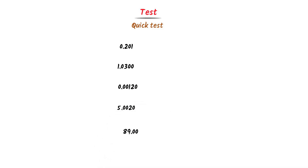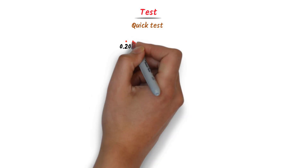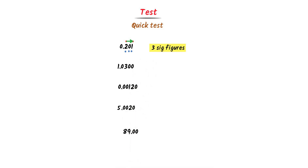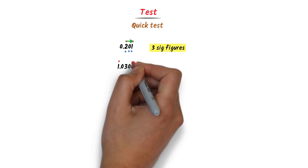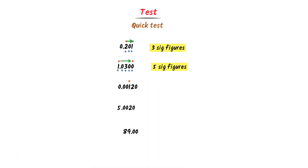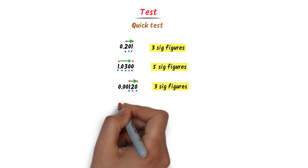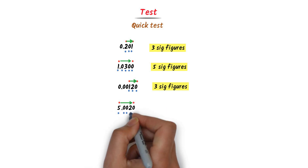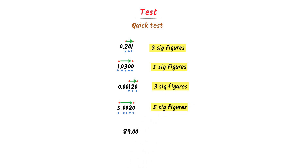Now I will take a quick test. Let's consider these decimal numbers. Pause the video and find significant figures. In case of the first number, the non-zero digit is 2. I go from 2 to the last: 1, 2, 3 — there are 3 significant figures. In the second number, the first non-zero digit is 1. I go from 1 to the last: 1, 2, 3, 4, 5 — there are 5 significant figures. In the third number, the first non-zero digit is 1. I go from 1 to the last: 1, 2, 3 — there are 3 significant figures. In the fourth number, the first non-zero digit is 5. I go from 5 to the last: 1, 2, 3, 4, 5 — there are 5 significant figures.